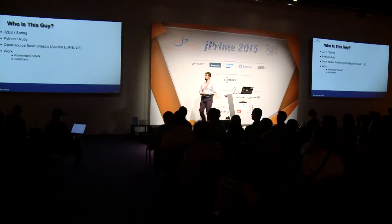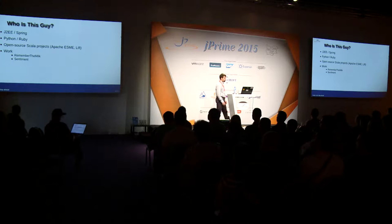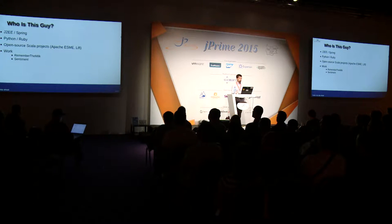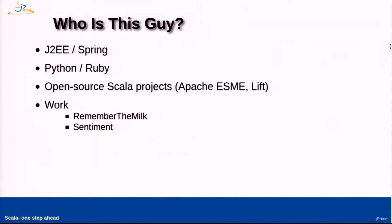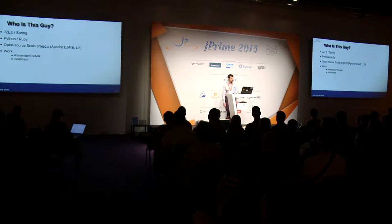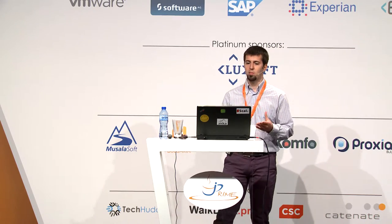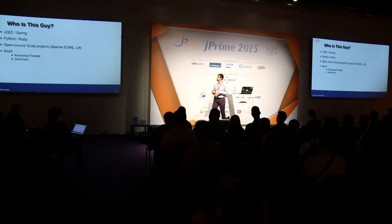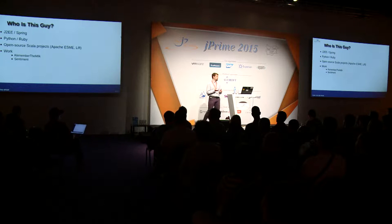Why did I come here to talk to you today about Scala? Like most of you, I have been working for most of my career with Java technologies. I started with J2EE, then I also used Spring for a while. I tried Python and Ruby for scripts and tasks, and I liked some of the things in Python and Ruby compared to Java — it was a lot shorter, more expressive. Java, on the other hand, was statically typed, which has some advantages. And then eventually I discovered Scala and found that it has many of the benefits of both Java and dynamic languages like Python and Ruby.